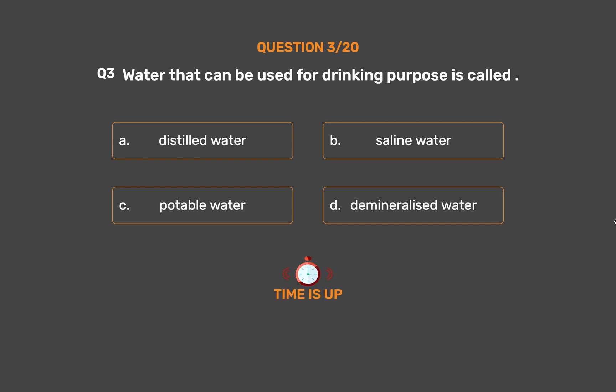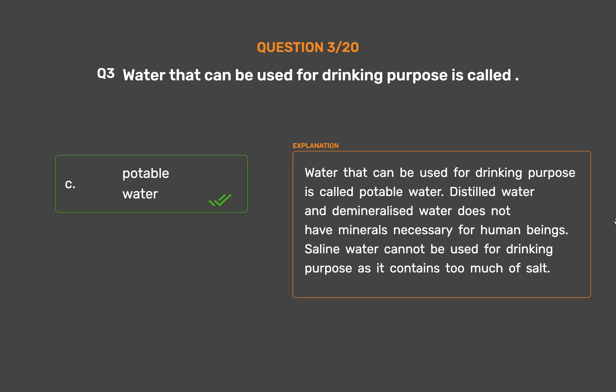The correct answer is Option C: Potable water. Water that can be used for drinking purposes is called potable water. Distilled water and demineralized water do not have the minerals necessary for human beings. Saline water cannot be used for drinking purposes as it contains too much salt.